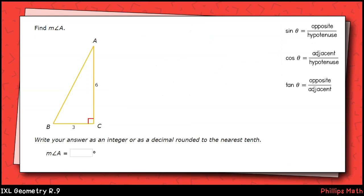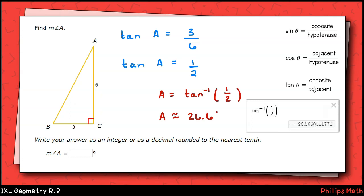The next one is not a special right triangle. IXL tells us to round our decimal answer to the nearest tenth. We're looking for the measure of angle a, and we're given the opposite and adjacent sides. Again, we'll use tangent here. We know that tangent of angle a is 3 over 6, or 1 half. That means that angle a equals the inverse tangent of 1 over 2. We'll use our calculator set to degrees, and we get approximately 26.6 degrees.